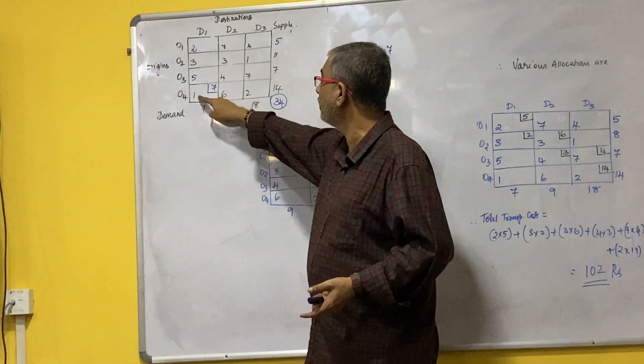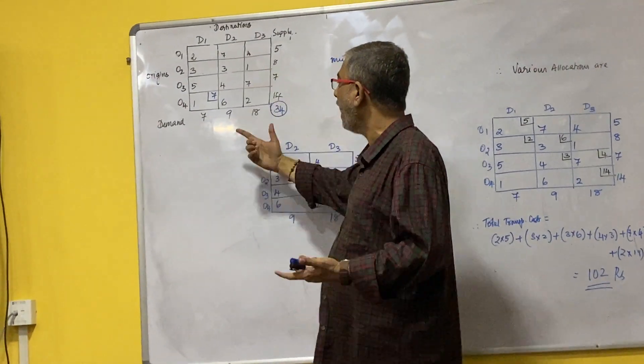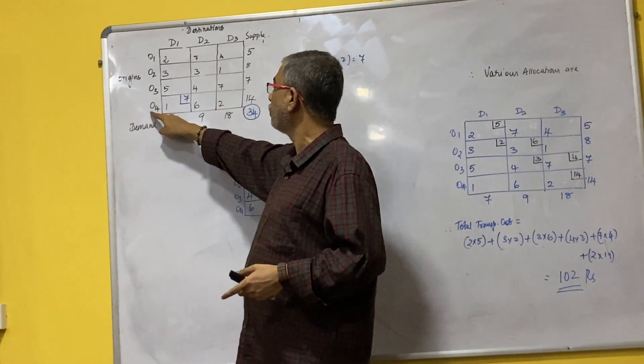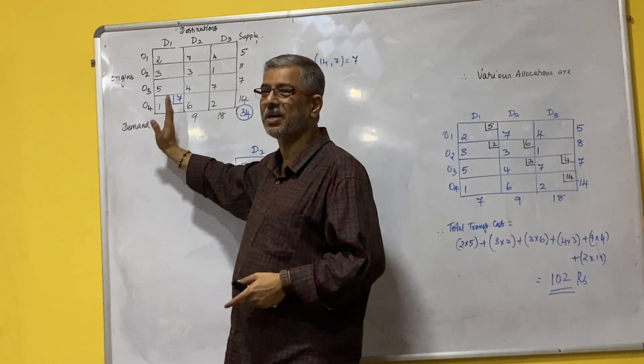So we do have two lowest costs, one and one over here. I prefer, there is no rule that we have to prefer like this only. So I prefer O4D1 to start with a corner side.